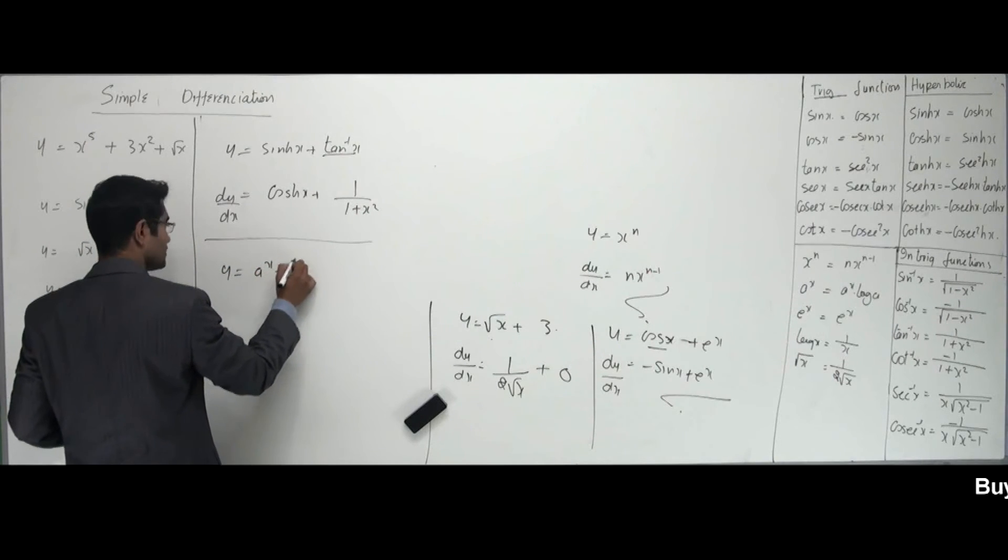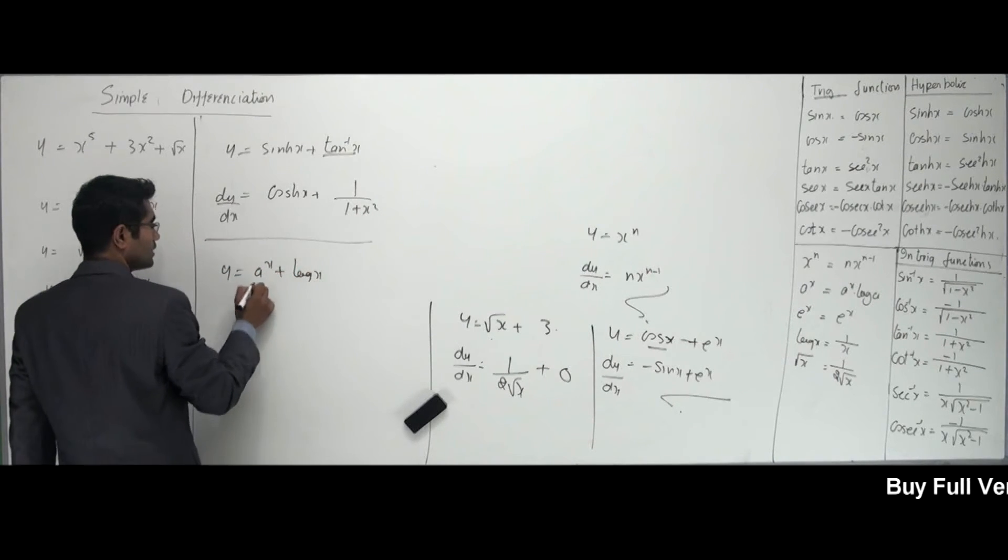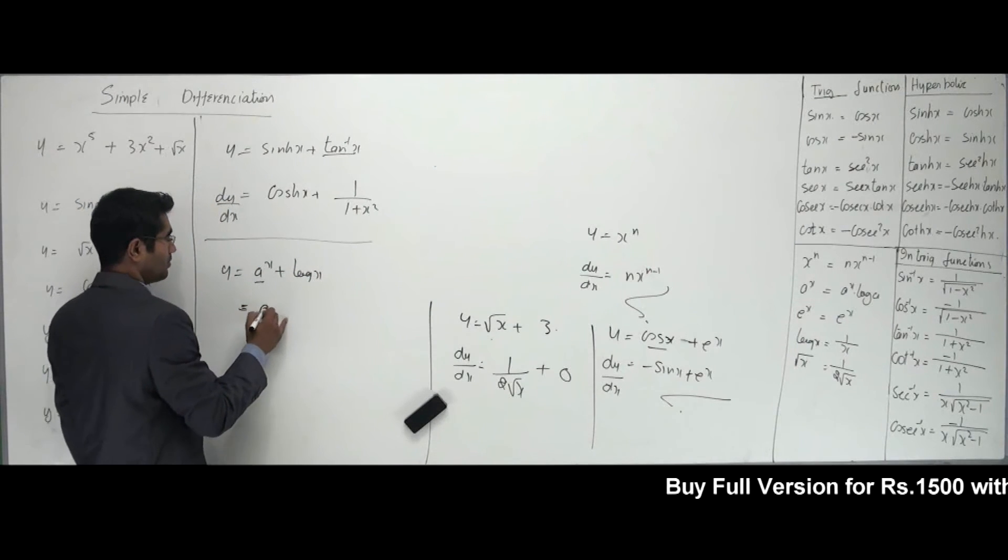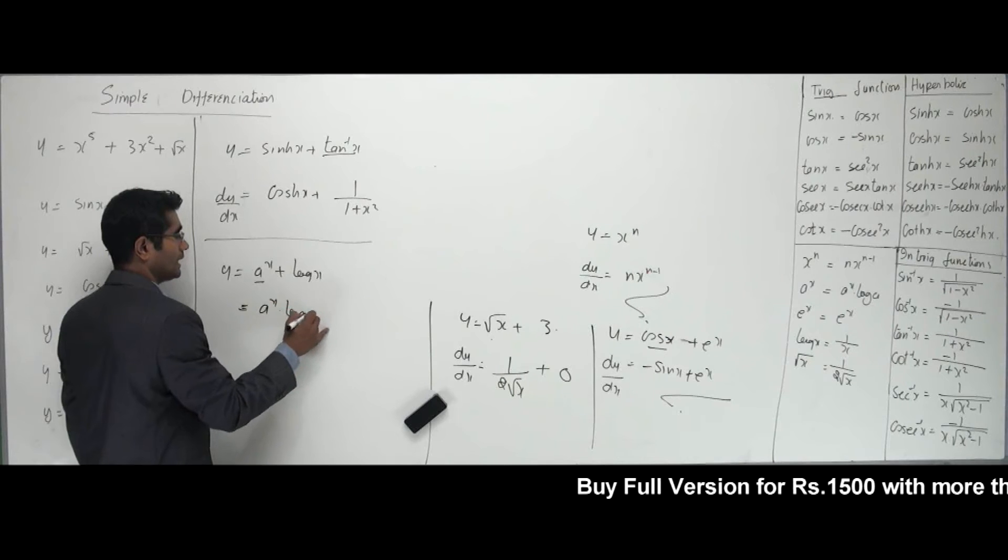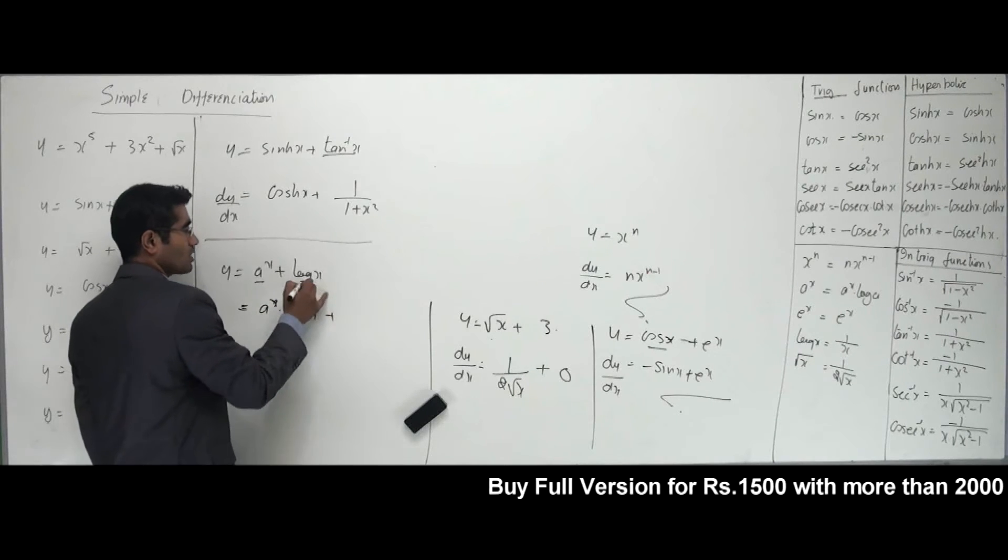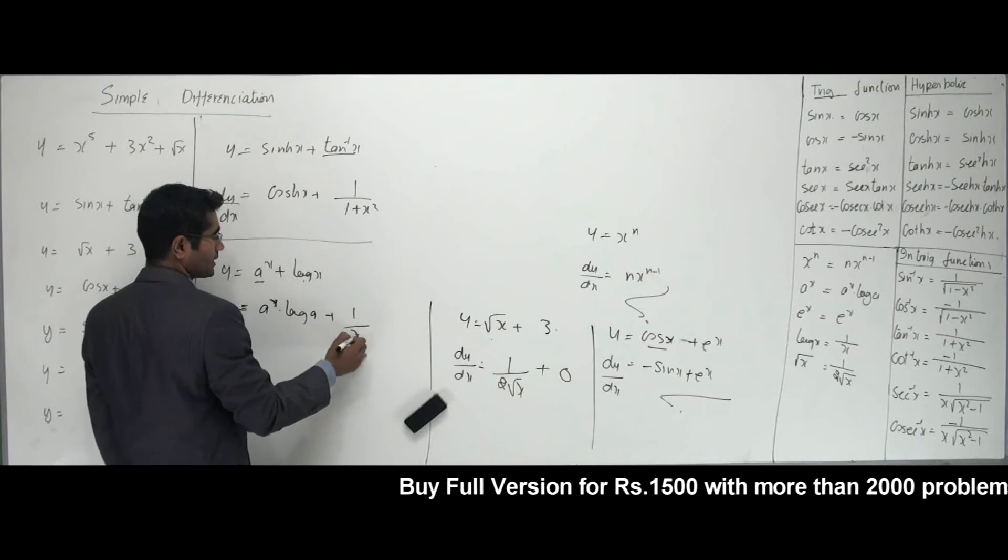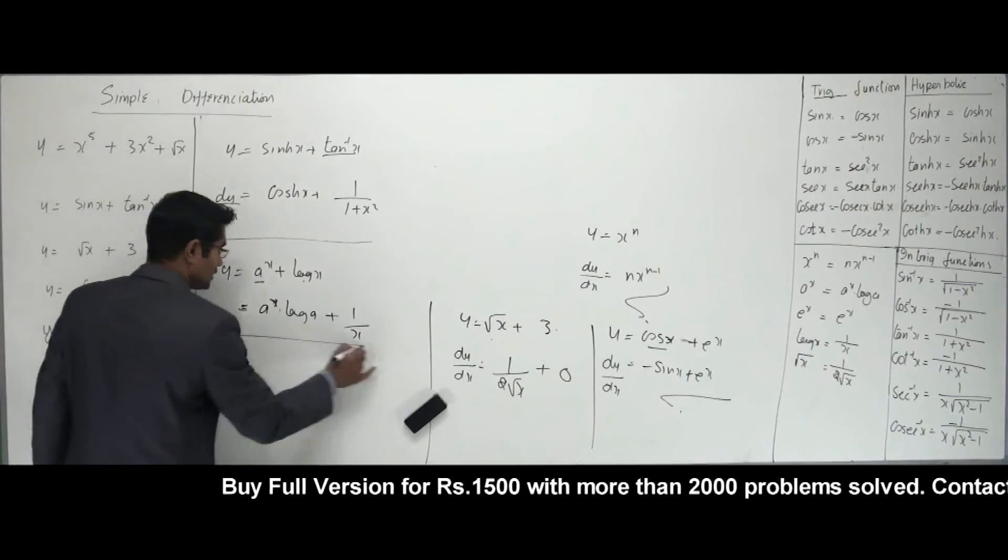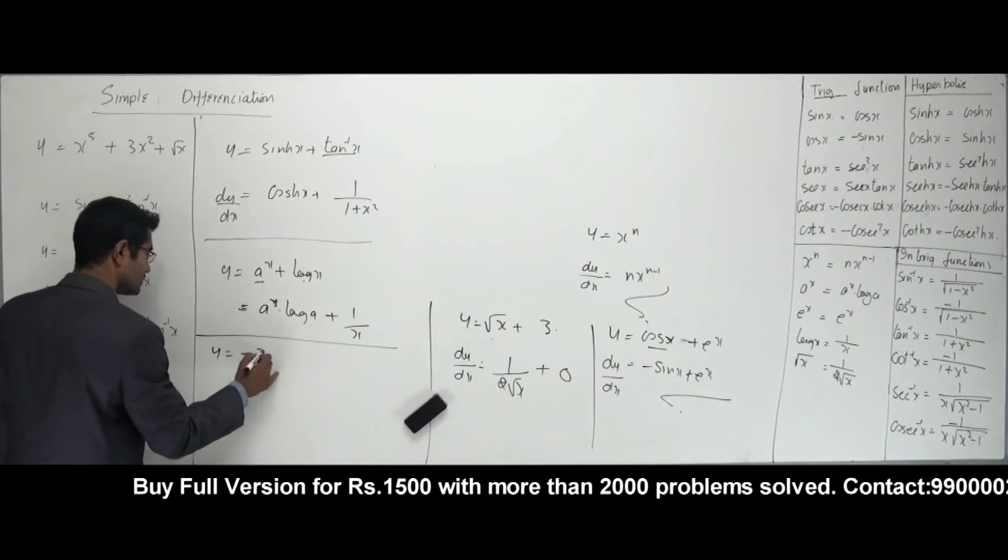You have y equals a to the power x plus log x. How do you use a to the power x? That is a to the power x times ln a. Derivative of log x is 1 over x.